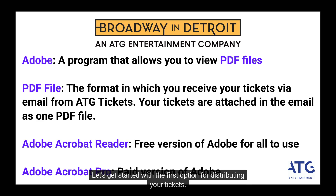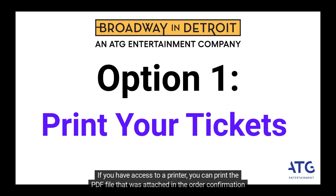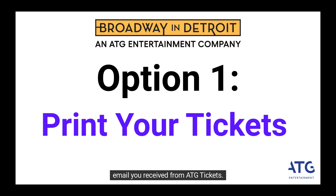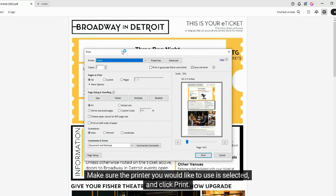The first and likely the simplest way to distribute your tickets is by printing them. If you have access to a printer, you can print the PDF file attached in the order confirmation email from ATG Tickets. This can be done in both the free and paid versions of Adobe. After you've opened the file, click on the printer icon, make sure the printer you would like to use is selected, and click Print. From here, distribute each page to your party.